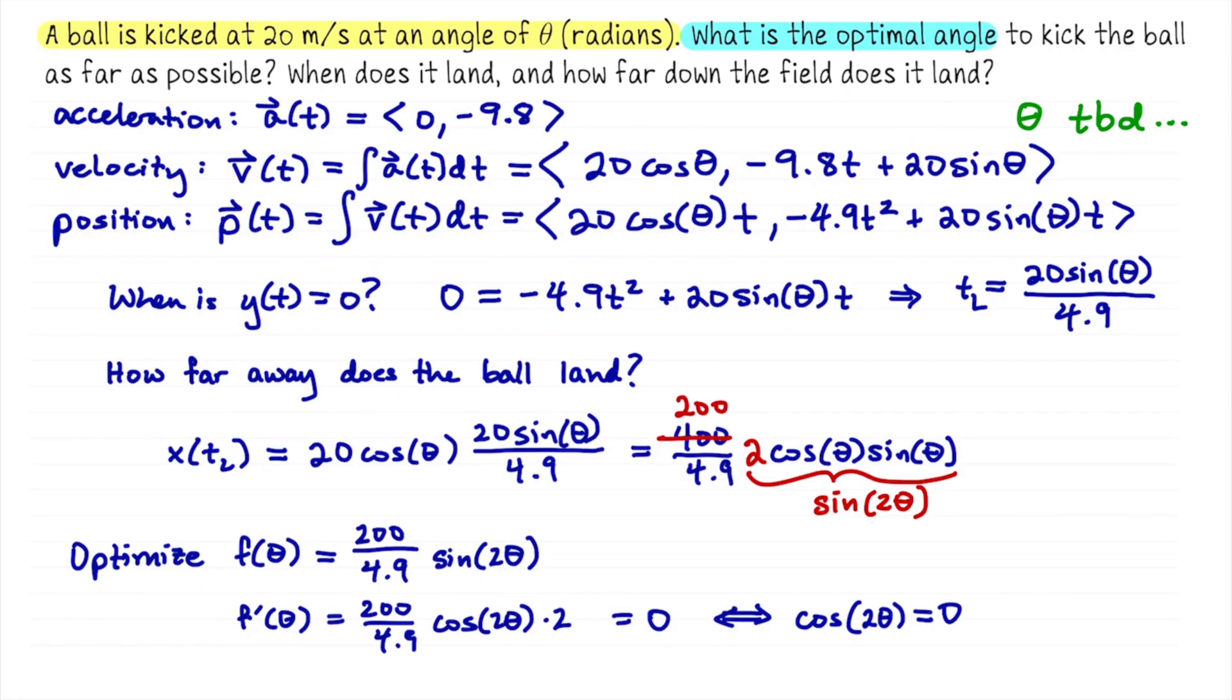So now we'd like to say, well, when is 2theta equal to pi over 2, 3 pi over 2, or negative pi over 2, negative 3 pi over 2? You might realize that most of those angles we can immediately reject because we're talking about kicking a ball into the air. So kicking it straight up would be like having theta equal pi over 2. There's no reason to consider 5 pi over 2, 7 pi over 2, those are just duplicates.